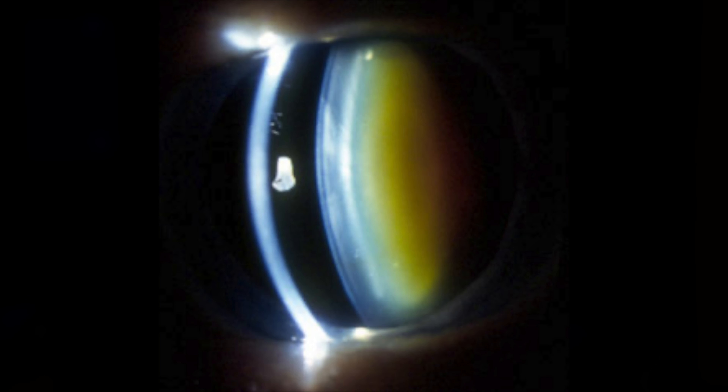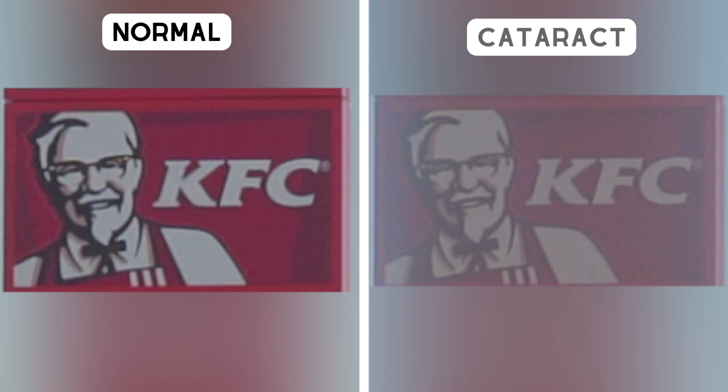Take, for example, the KFC logo shown above. On the left, we can clearly see the two different shades of red behind Colonel Sanders, whereas on the right, the difference is harder to distinguish. I also want to take this opportunity to explain that cataracts behave differently depending on what time of day it is. This is the same footage, but shown at night time. You can see that the haloing effects are much more distinct, making the overall image noisier.